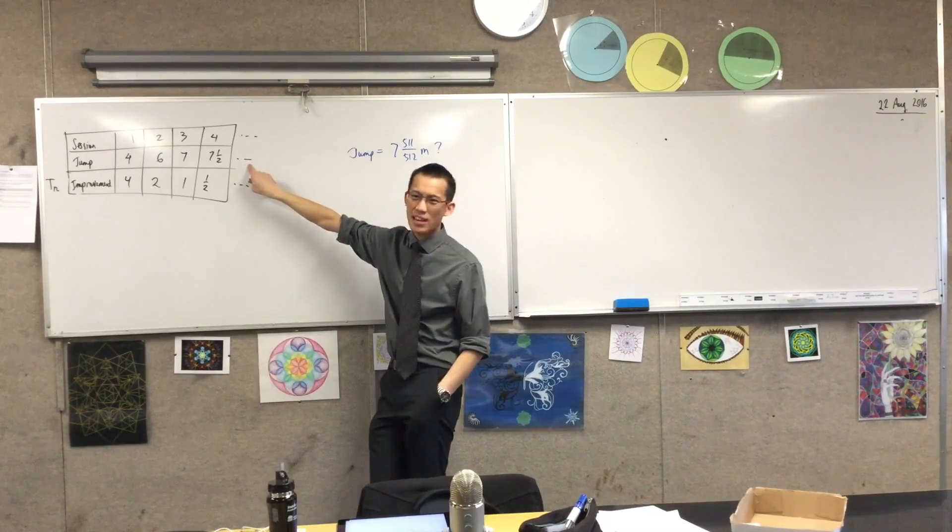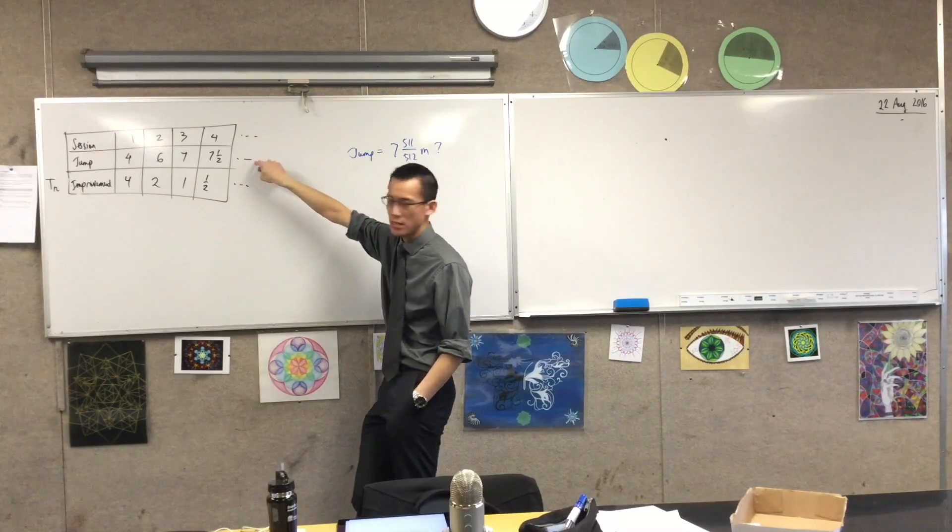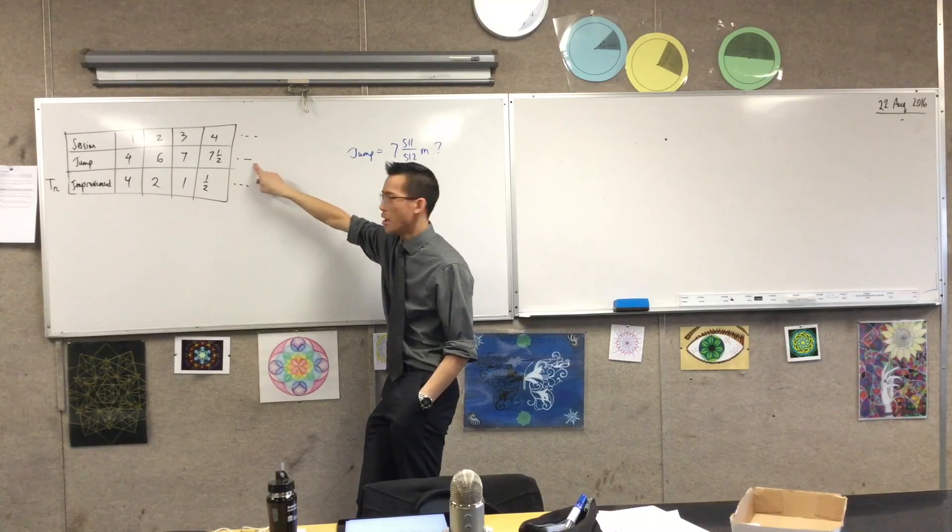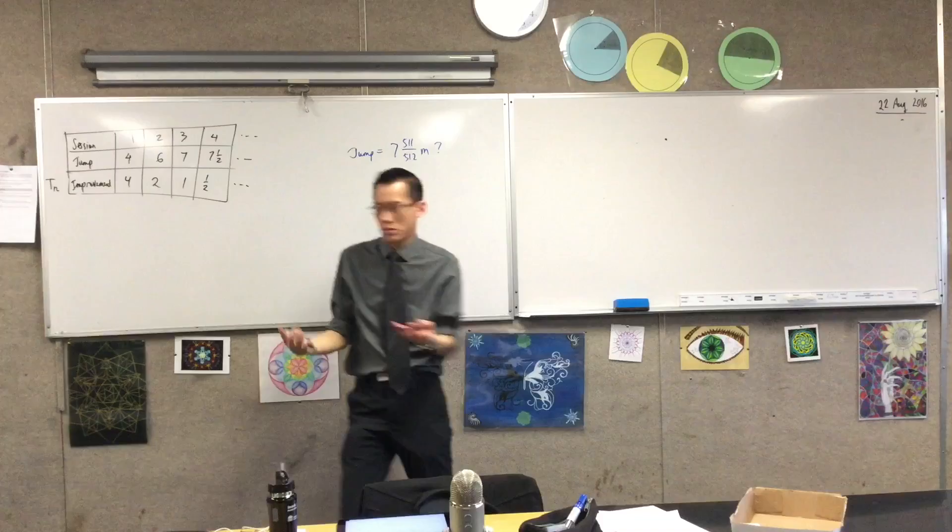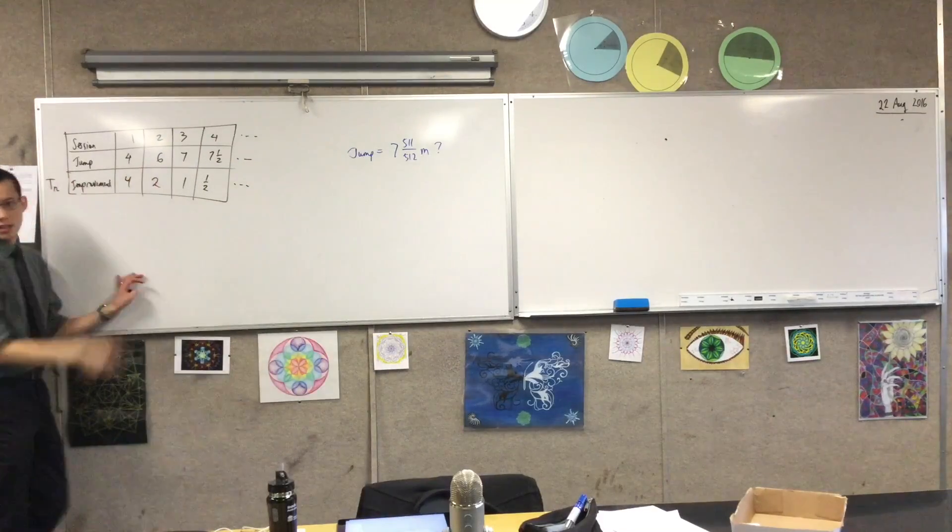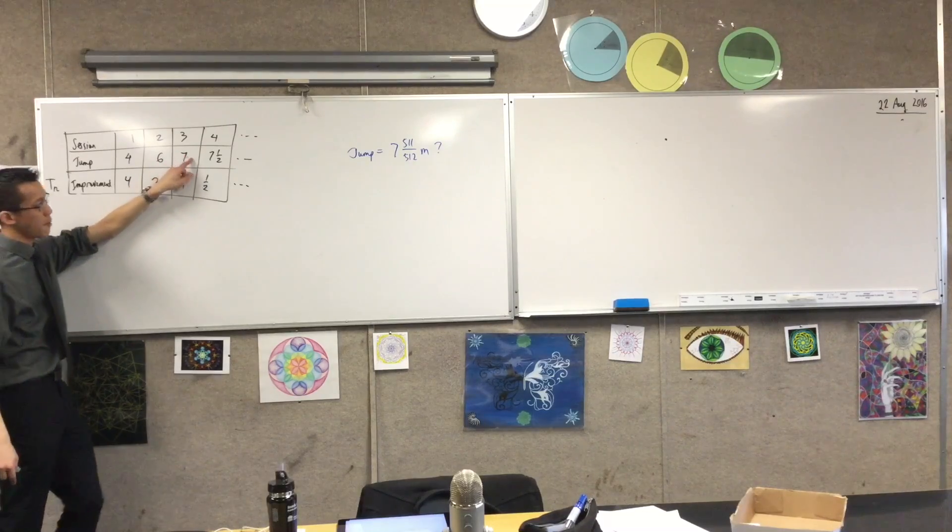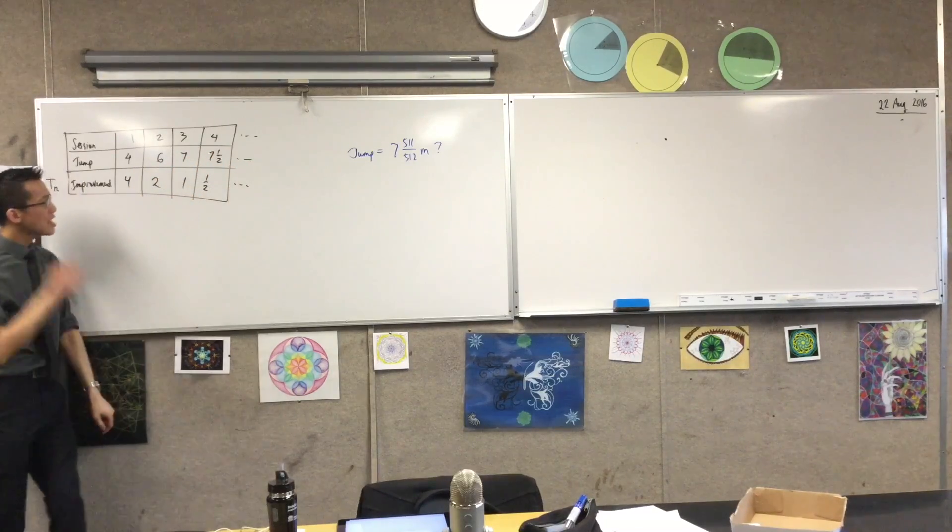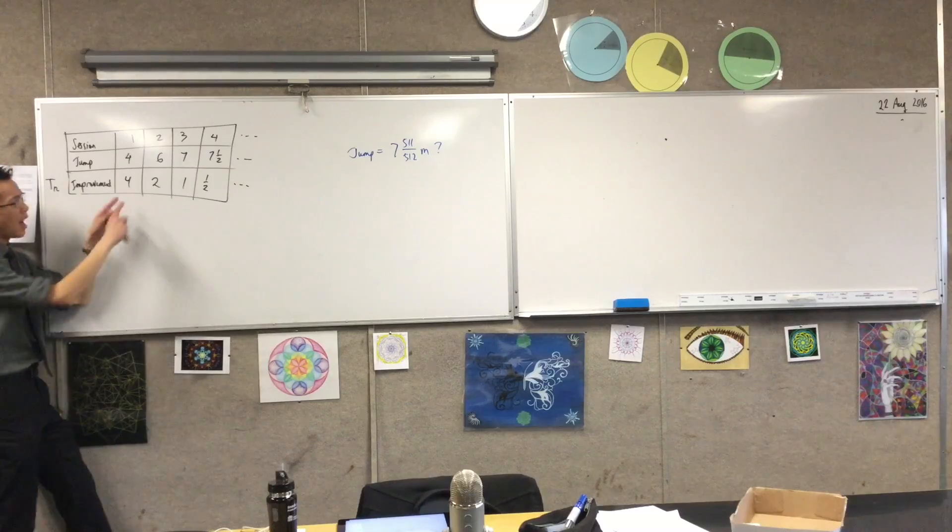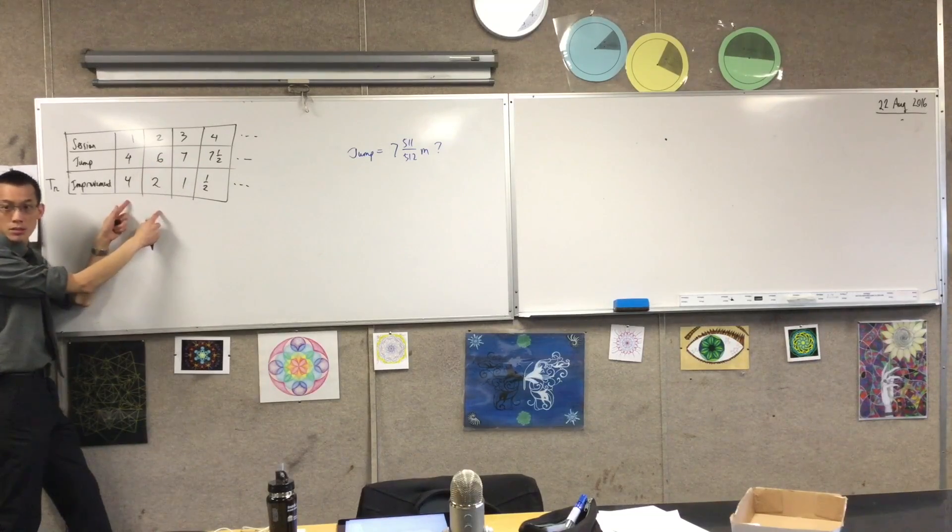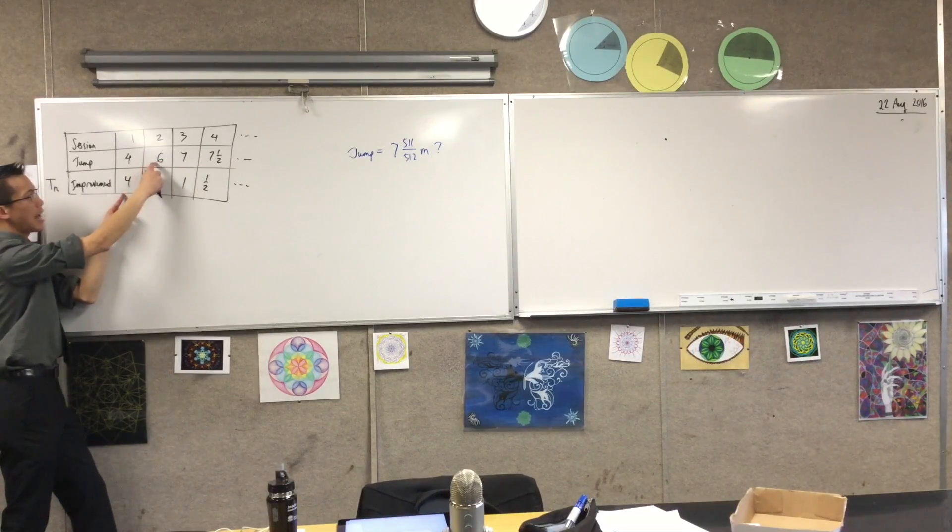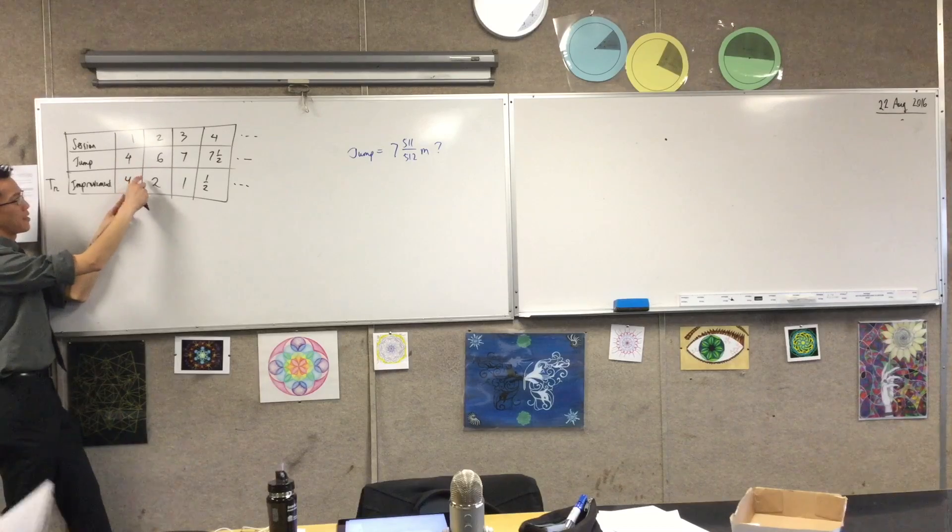But then you look at this guy and you say, that's weird because this is a series sequence, I should say. But it's not a GP, is it? Because from here to here, you don't multiply by some number that gets you from here to here. Nor do you get the same number from here to here. So then you have to think, well, hold on a second. I'm getting these numbers from these numbers.